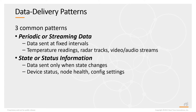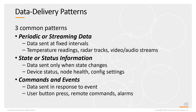Another kind of data is state or status information. This data is not sent periodically — it's sent only when the state changes. Device status, node health, and configuration settings are all kinds of state or status information. The third category is commands and events. This is data that's sent not periodically but in response to an event like an alarm, or a command like the user pressing a button.